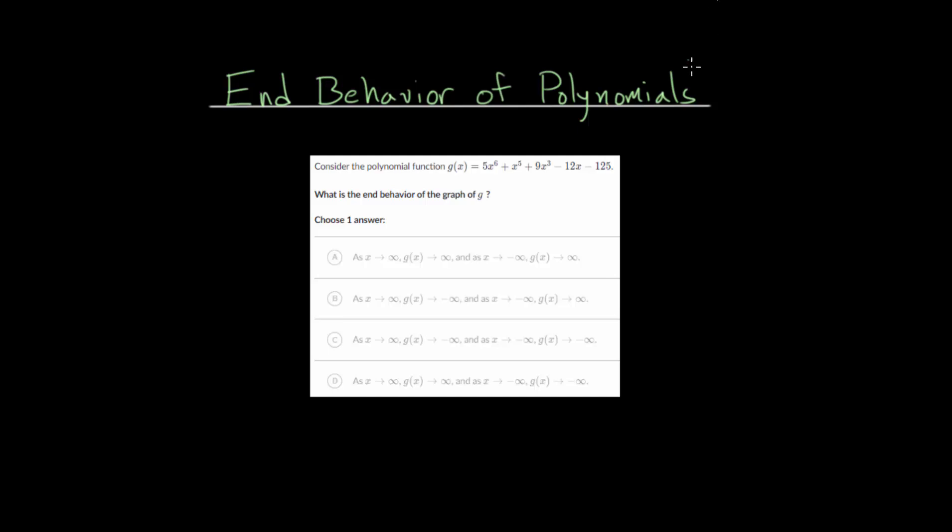In this video, I'd like to talk about the end behavior of polynomials. Essentially what this topic is looking at is when we have some polynomial, the question becomes what happens as the x values get very, very large or very, very negative? What happens to the graph?